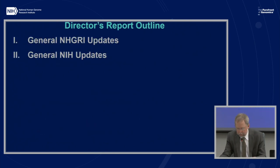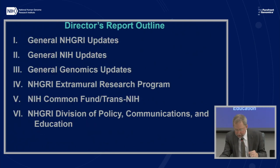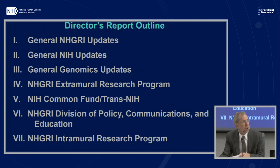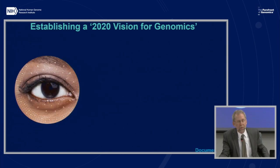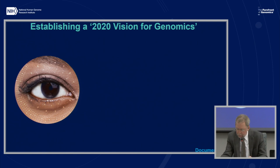In my director's report I'm going to cover seven areas that provide a nice framework for the topics I want to cover. Starting with one important institute update relating to our new strategic planning process. At the February council meeting, I announced the beginning of a new round of strategic planning for NHGRI — one that will establish a 2020 vision for genomics by publishing a new strategic plan in late 2020.